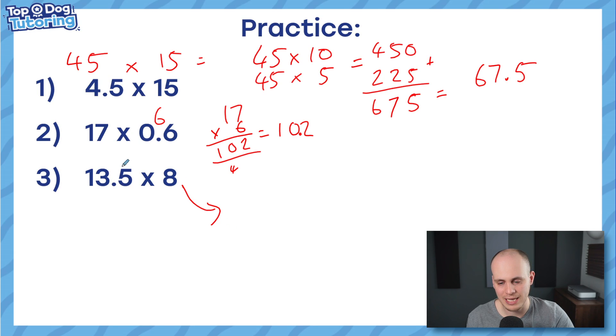And my final one I'll do down here, 13.5 times 8. I'm going to shift them all up a column by timesing it by 10 to make 135 times 8. 8 times 5 is 40. 8 times 3 is 24, plus the 4 is 28. And then 8 times 1 plus 2 is 10. So I've solved 135 times 8 is 1080. I'm going to simply divide this number by 10 to get 108. So the answer to this question is 108.